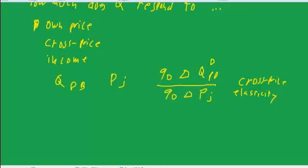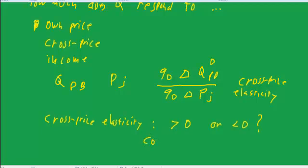The crucial question about the cross price elasticity is it greater than zero or less than zero? If it is greater than zero, then we have a substitute. That is, if we raise the price of something, then we want more of something else. That's a substitute.